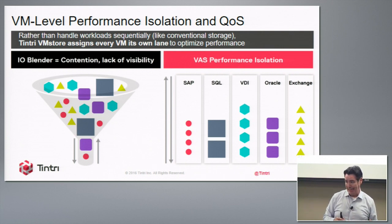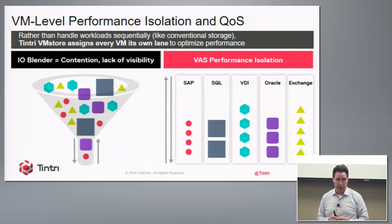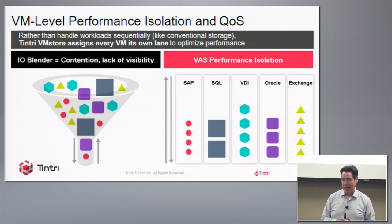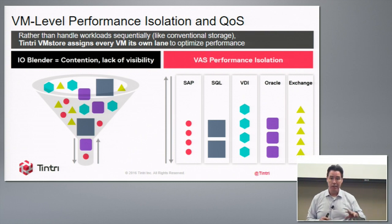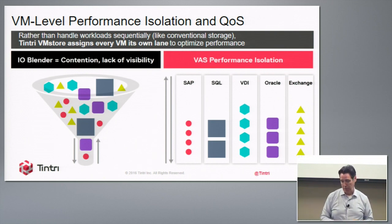Each virtual machine and virtual disk gets its own lane with its own queues, meaning you get no interference between virtual machines running on the same system. You can have thousands of VMs running in the same environment, easily scale by adding multiple different applications, and you don't have to do a lot of performance tuning. This is all auto-tuned and built-in since the start, and it's probably one of the biggest benefits people get when deploying large-scale environments using Tintree.